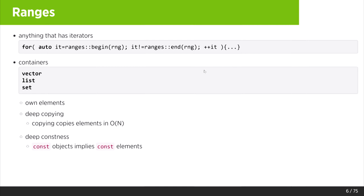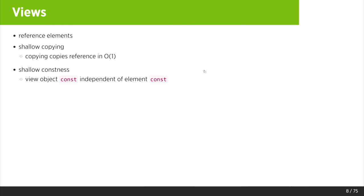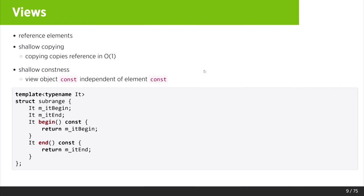There are also views, and views are different. They usually reference the elements, they have shallow copy — you can copy in O(1). They're thinking about weakening that a bit so you can move in O(1). And you have shallow constness: if your object is a view and it's const, that doesn't mean you cannot mutate the elements in that view. Views are what we always passed as iterator pairs into algorithms — that was exactly the semantics. The idea was simply: why pass two things into the algorithm? Why not bundle them together and pass them as one object? And that's now a view.